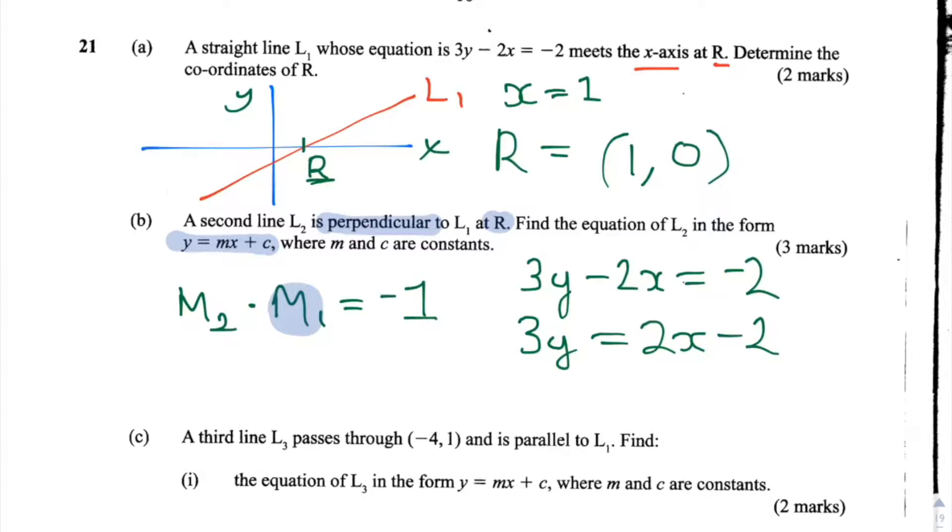Then we divide both sides by 3. So we get y equals 2 thirds x minus 2 thirds. So now all we need to do is find out what m is. We can clearly identify that in an equation of the form y equals mx plus c, m is the coefficient in front of the x. So in this case that's 2 thirds. So m1 is equal to 2 thirds.